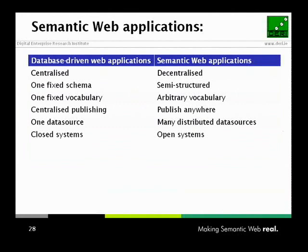If you look at semantic web applications — or if you think the semantic web is hype, just replace 'Web 2.0 applications' — they are more open systems. They are decentralized. The data can be across different sources. It's semi-structured data. You don't get to decide upfront which data will be in there because there's no single point of control. It doesn't make sense to have a very strict schema. You have arbitrary vocabulary, and you need to crawl or somehow aggregate all these distributed data sources.